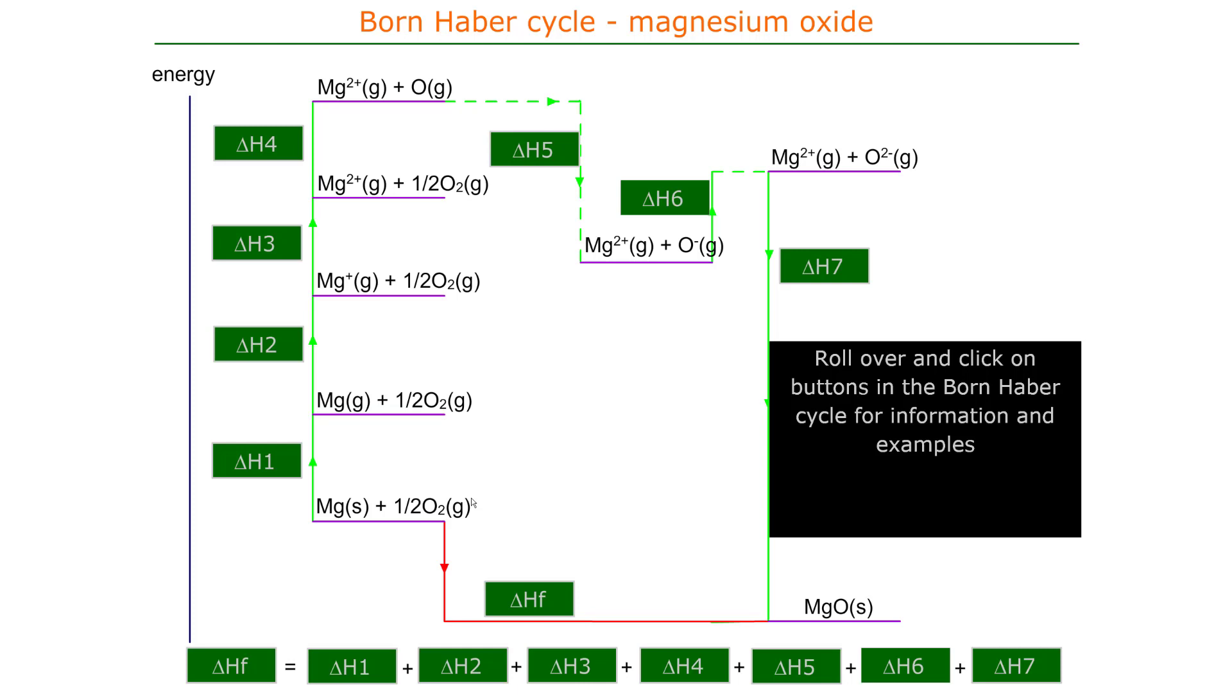The enthalpy of formation, delta HF, is shown here. It goes from Mg solid plus half O2 gas to give us MgO solid. We can get to MgO solid by looking at all of the possible energy changes that need to take place.